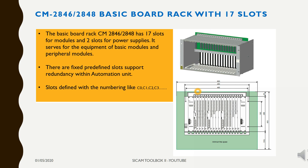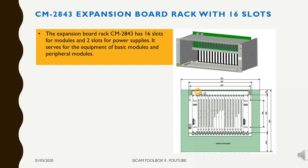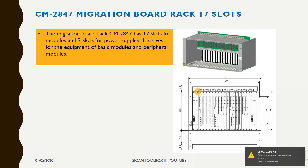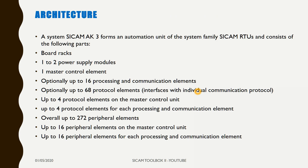Slots are defined with numbering like C0, C1, C2, C3. The CM2846 is a bigger version of CM2844 with 17 slots for modules and 2 slots for power supplies. Expansion Board Rack CM2843 has 16 slots for modules and 2 slots for power supplies. It serves for the equipment of basic modules and peripheral modules. The Migration Board Rack CM2847 has 17 slots for modules and 2 slots for power supplies.